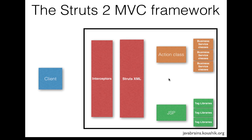This is an overall high-level picture of a Struts2 MVC web application. But since we're developing a small bare-bones Struts2 application in this tutorial, we're going to stick to the essentials. We'll try to remove some of the elements initially and we'll learn what they are and add them later. The first thing I'm going to remove is the business service classes and the business service methods.